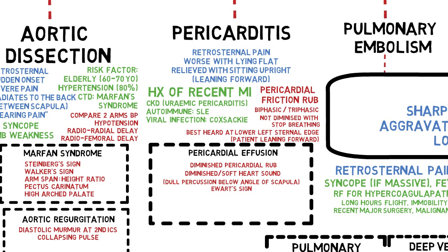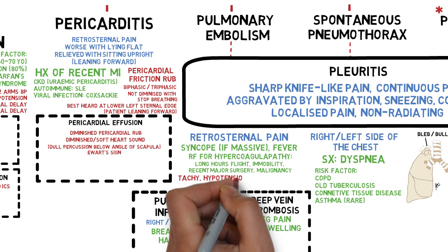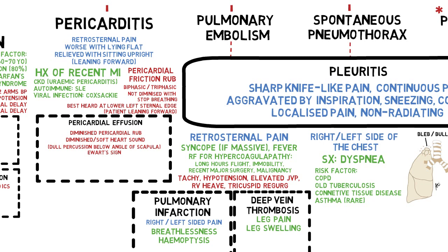This is also known as the Ewart sign. Massive pulmonary embolism will cause hypotension, elevated JVP, right ventricular heave, and tricuspid regurgitation. This is because less blood returns to the heart from the pulmonary circulation, resulting in poor cardiac output. The embolism causes backward pressure, hence elevation of JVP, right ventricular heave, and tricuspid regurgitation.